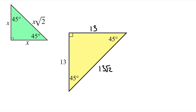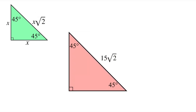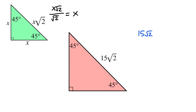Now, what if we're given the hypotenuse? In our pattern, the hypotenuse is x root 2. If we divide x root 2 by root 2, it gives us the leg length x. So with this triangle, we do 15 root 2 divided by root 2 — the two root 2s cancel out, and we get 15. So our leg here is 15, and our other leg is also 15.